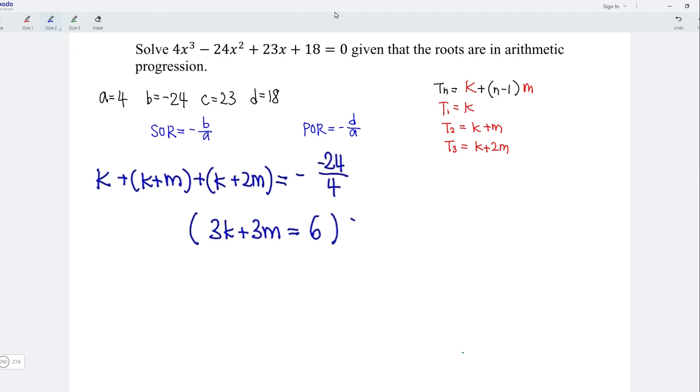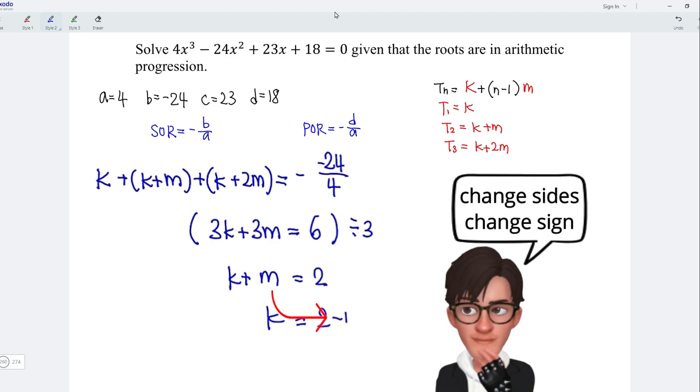Divide both sides with a factor of 3, and we obtain K plus M is equal to 2. In other words, K is equal to 2 minus M.